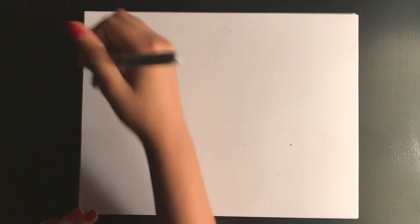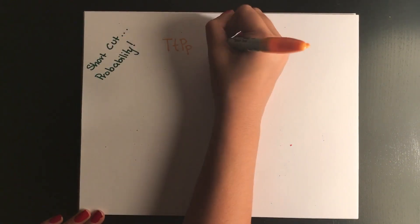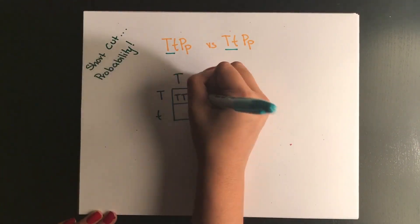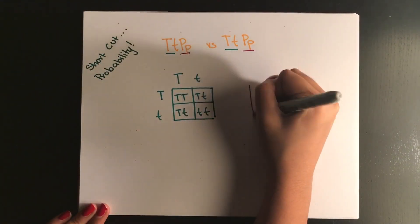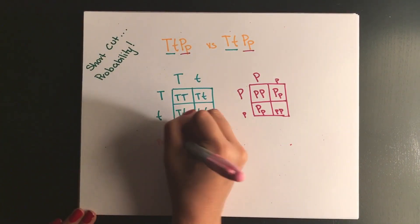You can also use the rules of probability to determine the ratio of your offspring. In this case we're trying to determine the percentage or the ratio of plants that are tall with purple flowers.